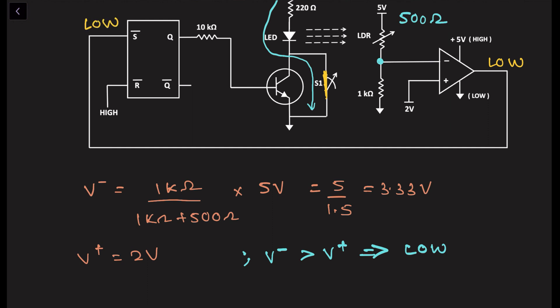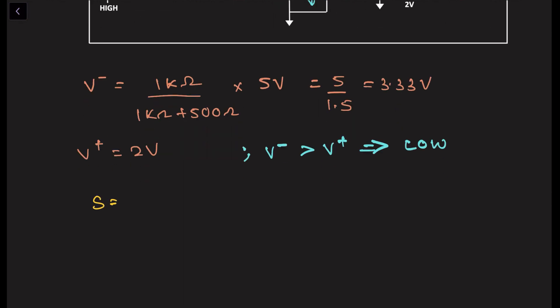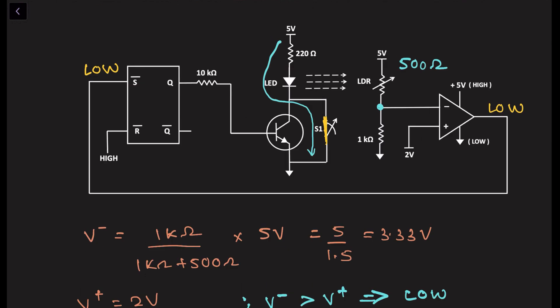Now S equals 0 and R equals 1. Since the SR flip-flop is active-low, in this condition the Q output will become 1, meaning Q goes high. As soon as switch S1 closes, the LED turns ON and simultaneously the Q output of the SR flip-flop becomes high. Once Q is high, the input to the base of the transistor also becomes high, and therefore the transistor starts conducting.